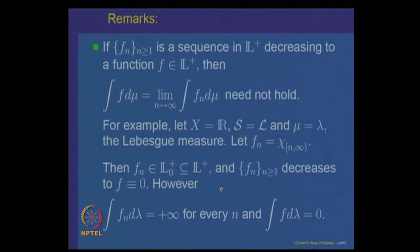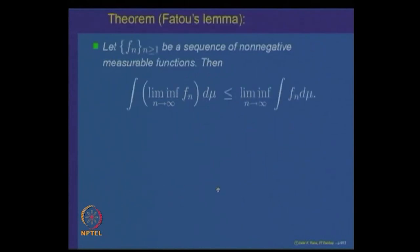However, one can prove an inequality for a sequence of non-negative measurable functions; that is also an important result. Let us prove what is called Fatou's Lemma. It says: let f_n be a sequence of non-negative measurable functions; then the integral of the limit inferior of f_n d-mu is less than or equal to the limit inferior of the integrals f_n d-mu.